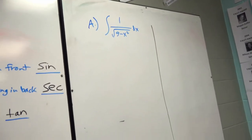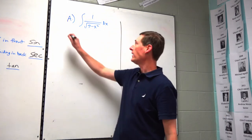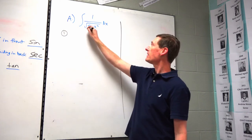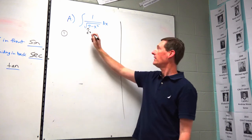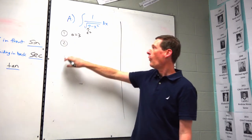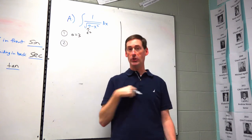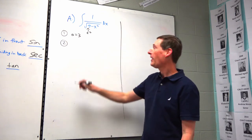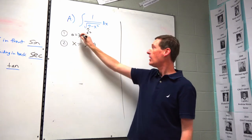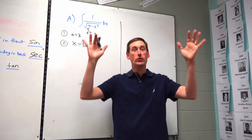Let's go to example A: the integral of 1 over the square root of (9 minus x²). Step one: identify your a². The constant is a², so a² equals 9, therefore a equals 3. Step two: the a² is in front of the minus x², so if the a is in front it's a sin — we're going to let x equal a·sine(θ), which is 3·sine(θ).